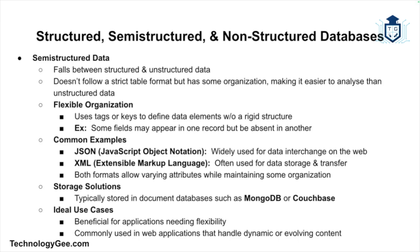Next, let's talk about semi-structured data. Semi-structured data falls between structured and non-structured data — it doesn't adhere to a strict table format but still has some organizational properties. It may have tags or keys that define certain data elements, but the structure isn't rigid; some fields might exist in one record but not in another. Examples include JSON and XML documents. This type of data is often stored in document databases like MongoDB or CouchBase and is particularly useful for web applications handling dynamic content.